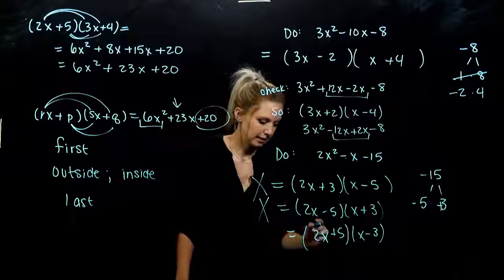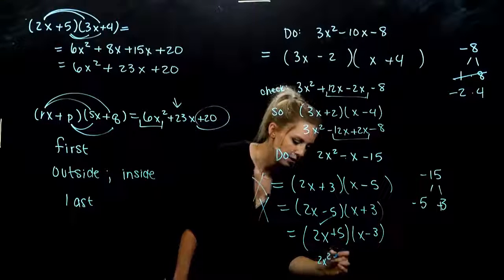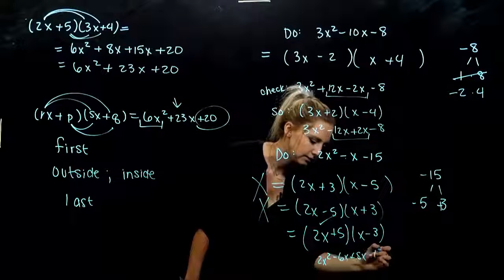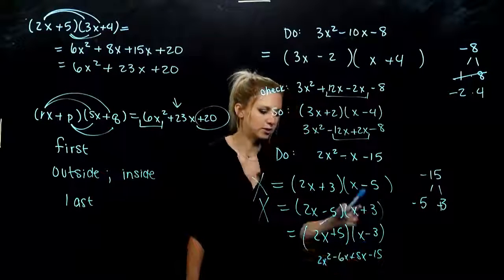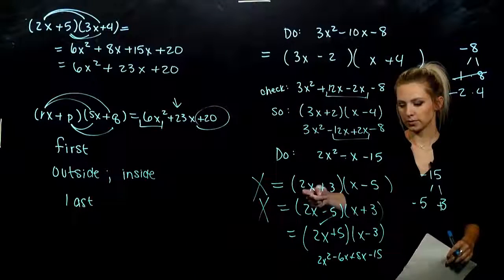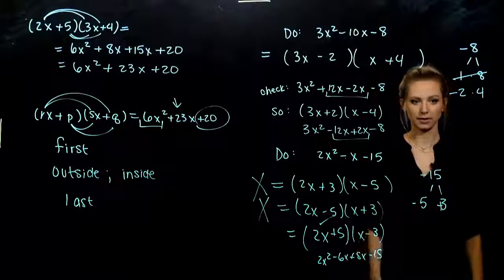Let's check. And again, FOIL in first. 2x squared. Outer minus 6x. Inner plus 5x. Last minus 15. So we get to the middle term that we were looking for. But again, in this case, we had to go through one, two, three different rounds before we got to the correct answer. And that's going to take a while.